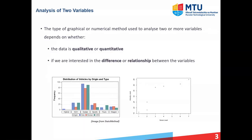As discussed in the previous lecture when we looked at the analysis of one variable, for two or more variables the type of graphical or numerical method that you use is going to depend on two things. Firstly, is the data qualitative or quantitative? And secondly, are we interested in the difference or relationship between the variables?